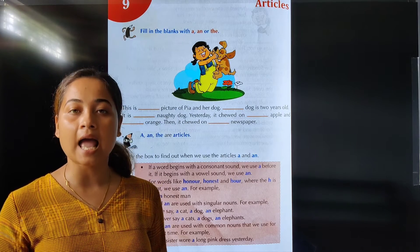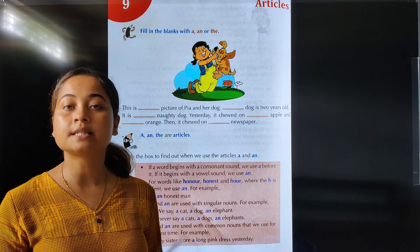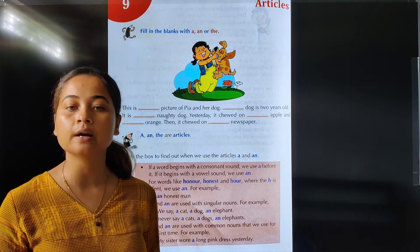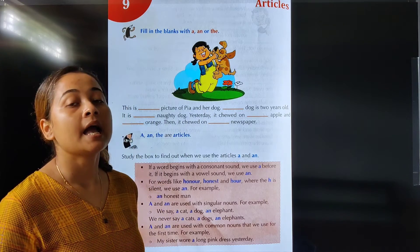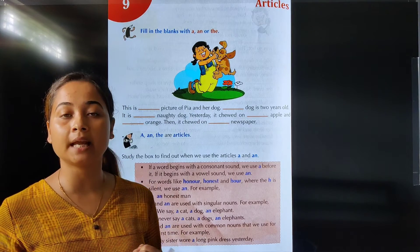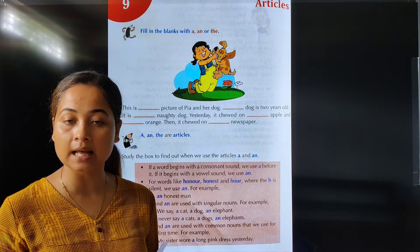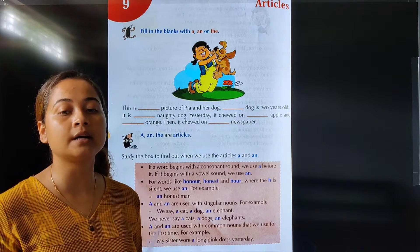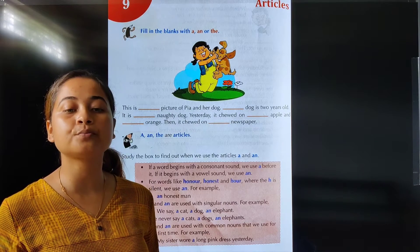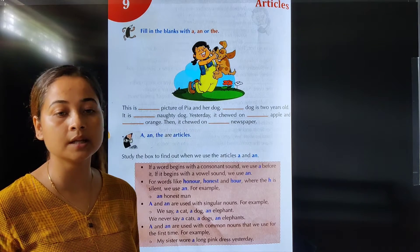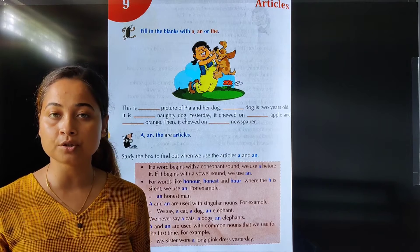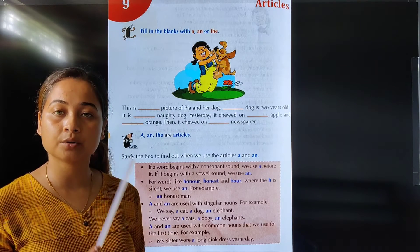A and an are used with singular nouns, whereas the can be used both with singular and plural nouns. A and an are used with one person, one animal and one thing. A is used before nouns which begin with consonants, and an is used before nouns that begin with vowel sounds. Whereas the is used to refer to specific or particular nouns.